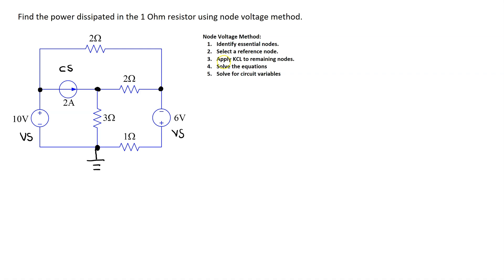Step three is to apply Kirchhoff's current law to the remaining nodes. Let's label the nodes as V1, V2, and V3. Before we do that, observe node one — because of our choice of reference node, we have the 10 volt voltage source directly connected between ground and node 1.